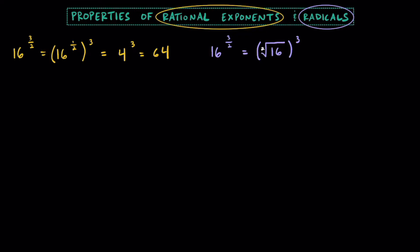If you take the square root of 16, that's going to equal 4. And 4 to the 3rd power is going to be equal to 64, just like what we got earlier. The key to understanding how these two are related to each other is that raising 16 to the 1 half power is equivalent to taking the square root of 16.